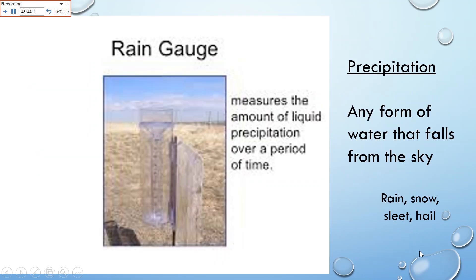Here's a rain gauge. It's exactly what it sounds like — it gauges how much rain there is. Basically, it's this cup, and when it rains, it catches the rain. Then you read it and measure how much rain is in there, so it measures the amount of precipitation over a certain period of time.